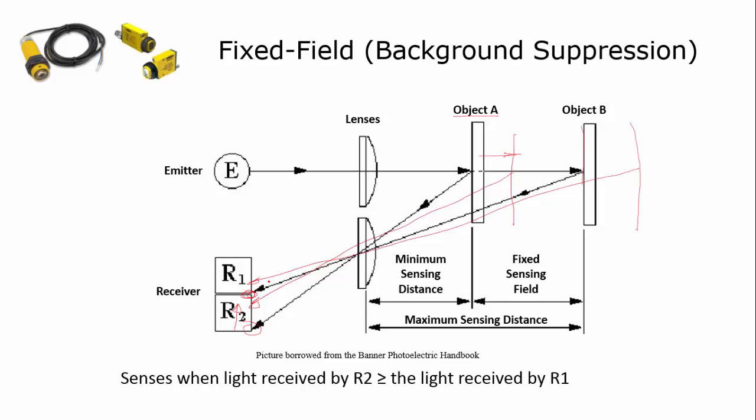Now the light striking R1 is greater than the light striking R2, and the sensor will say there's no object there. So when you look at this sensor, you have a fixed sensing field. It'll see objects from this point to this point.